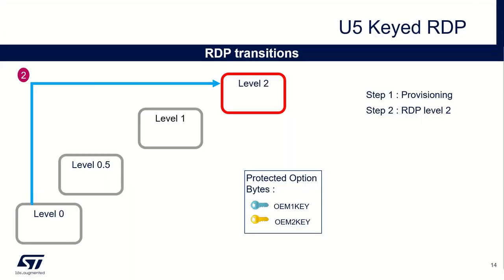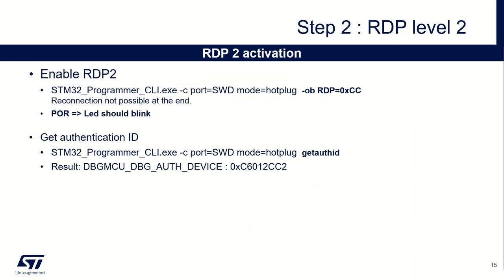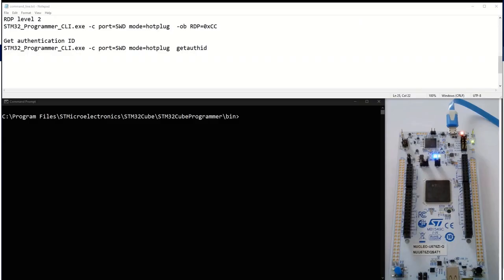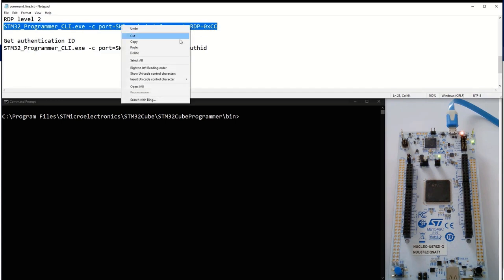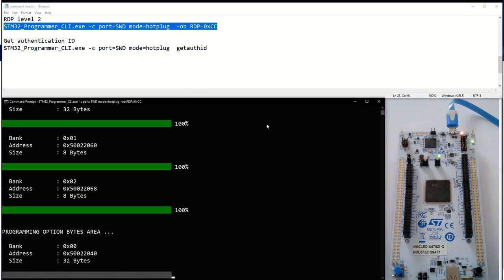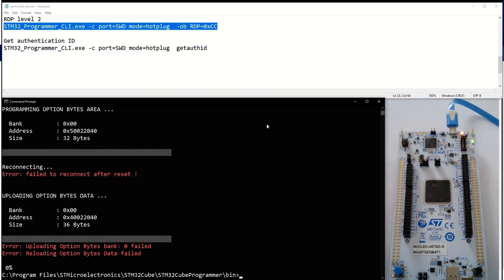The second step is to activate RDP level 2. Please ensure you properly provision the OEM2 key before this step, because if you don't do this you will break your device. To switch to RDP level 2, it's just writing to the option byte in a classical way. I'll take the opportunity here to get the authentication ID of the device — obviously the value on your device will be different. We will now move to RDP level 2. We get this error because it can't reconnect, as we have a specific mode with RDP level 2.